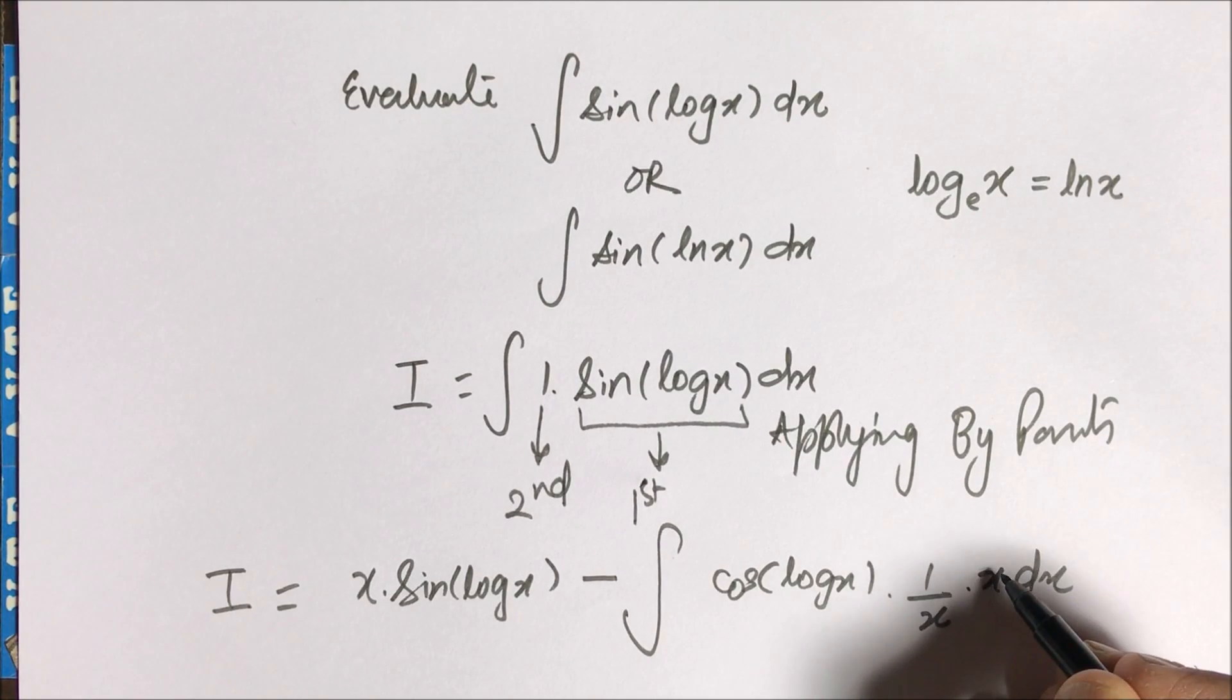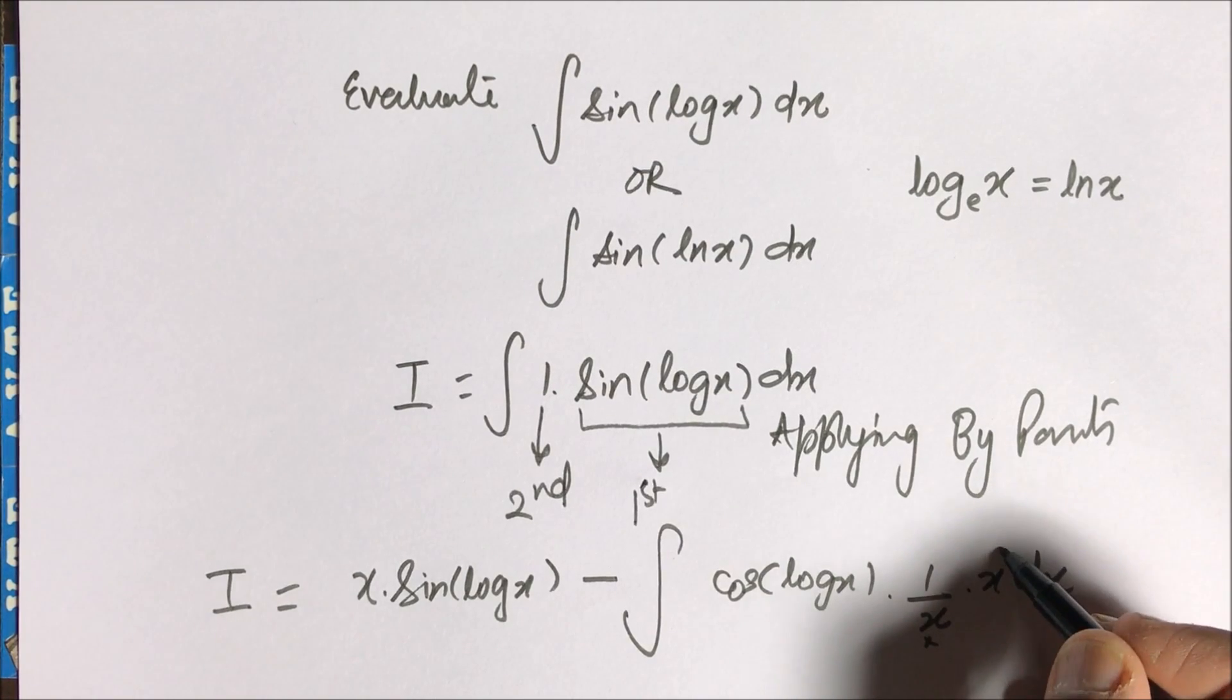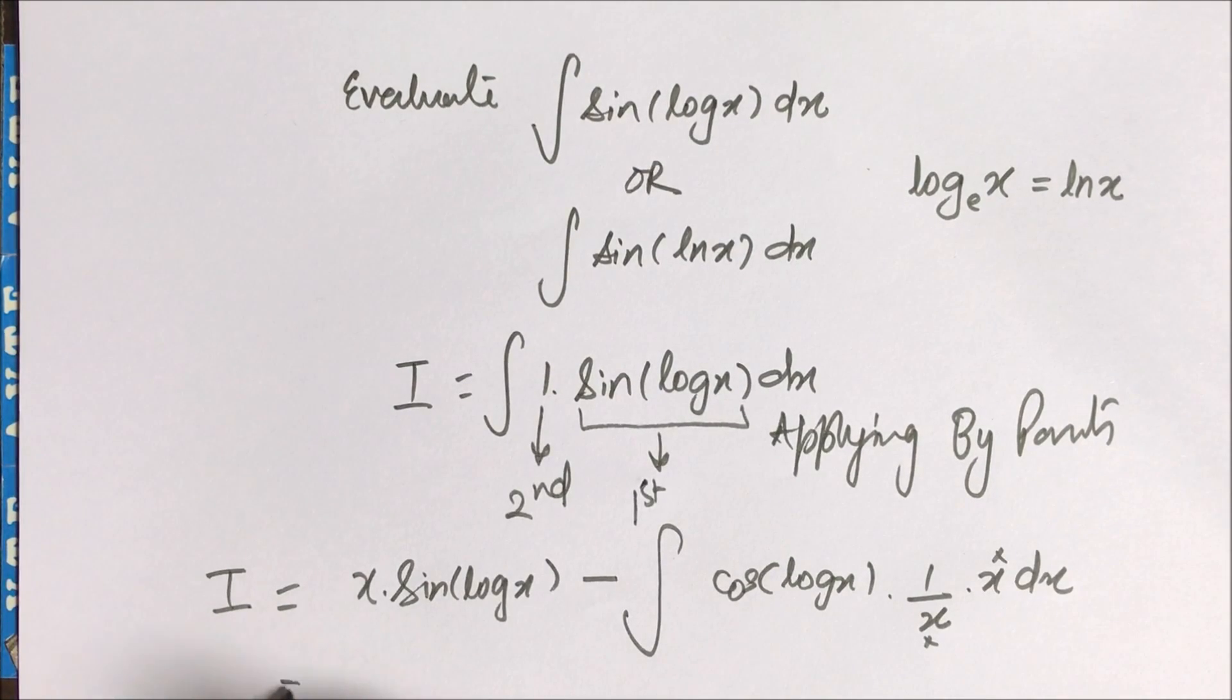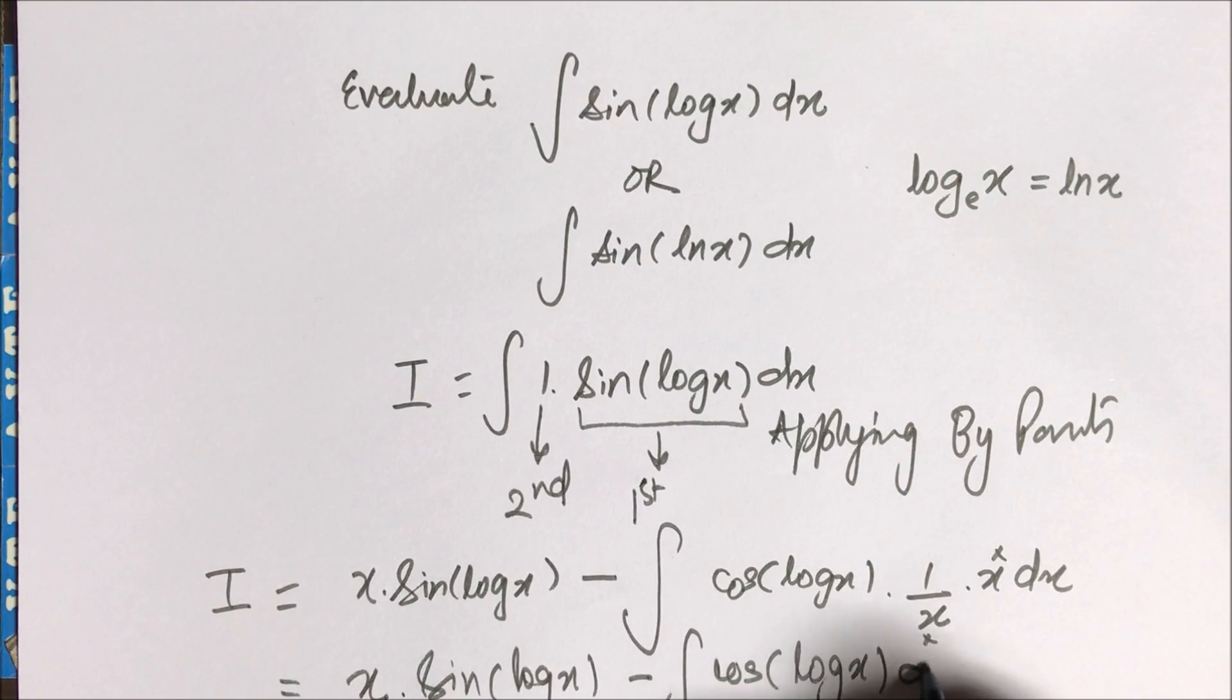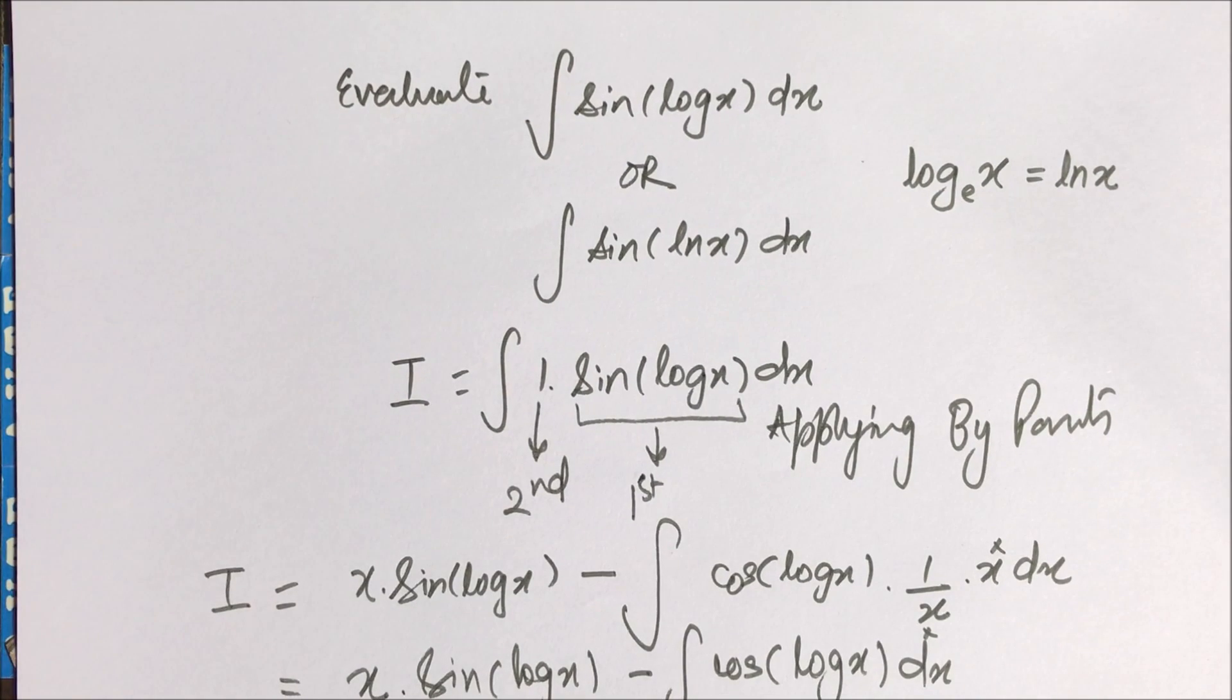This x and this x are cancelled. So you can see it again, and now we'll apply by parts on cos(log x).